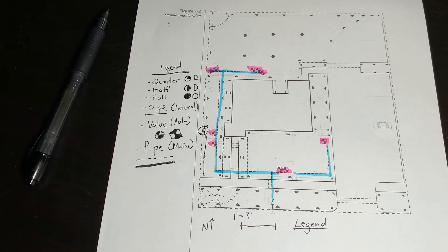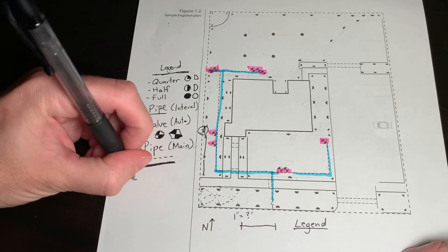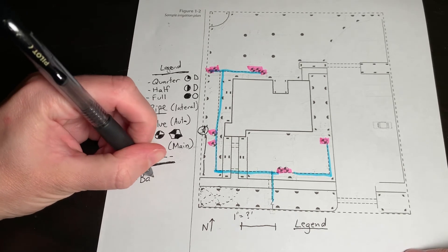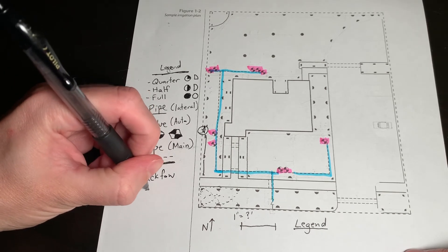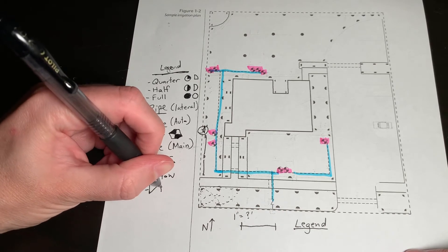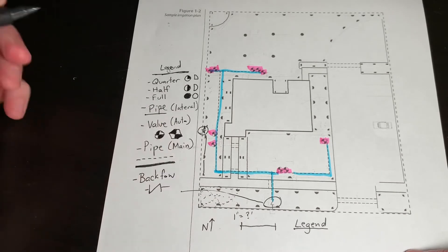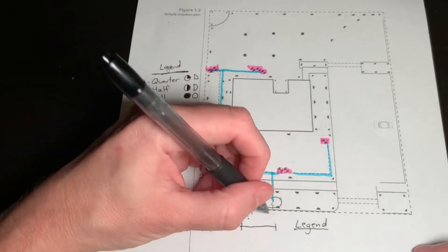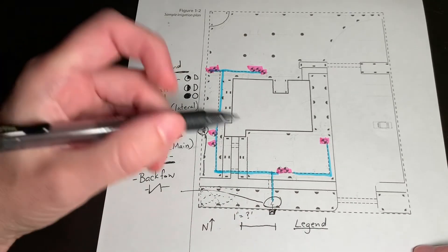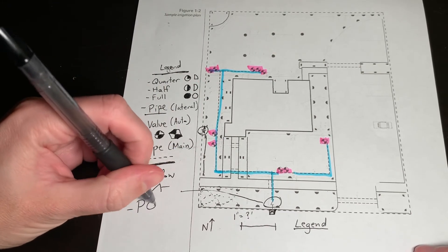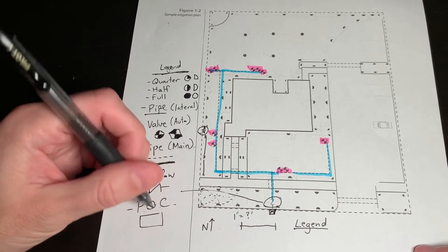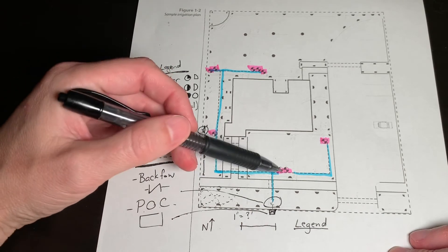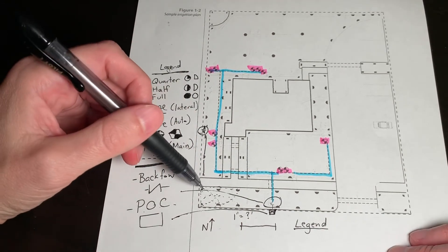And then we can see a few other things. We have a backflow device. And that's indicated with this symbol here. Sometimes that's crossed like a little bow tie. That's your backflow device. And then right here we have a little box that says M. That's our POC, point of connection. You always want to make sure you have point of connection, backflow, main lines, valves, lateral lines, and sprinkler heads.